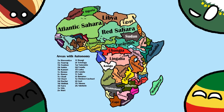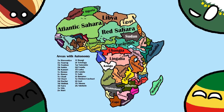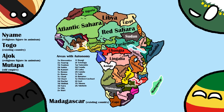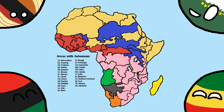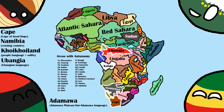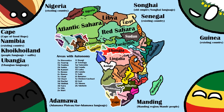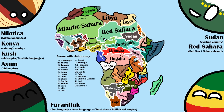The first hard line we can draw is that of religion. The only exception is one Christian nation that I incorporated into the Islamic Freiluk because I had no other choice. Using religion we can immediately make out some countries with traditional folk religions: Niamey, Togo, Ajok, Mutapa, and Madagascar. These also separate some Christian lands off the main cluster, forming Liberu, Ashantia, and Ethiopia. The next line we can draw is that of language families, making out Cape, Namibia, and Kogorland, followed by Adamawa, creating Ubangia and Nigeria, then Manding separating Shangai, Senegal, Guinea, Volta, and Fulania. The border between Nidolika and Freiluk forced the creation of Kenya, Kush, Aksum, Sudan, Red Sahara, and finally Chousa.